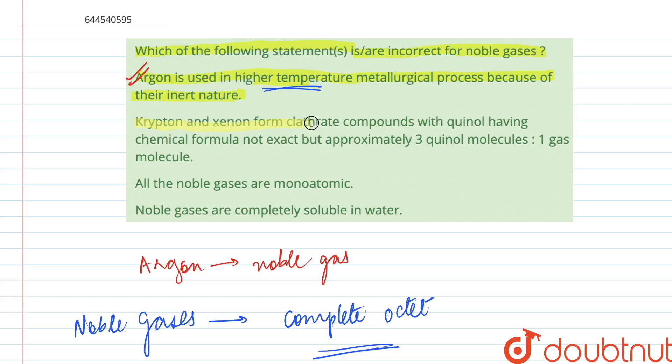Krypton and xenon form clathrate compounds with quinol having chemical formula not exact but approximately 3 quinol molecules to 1 gas molecule. This given statement is also correct since we know that xenon and krypton are used to form clathrate with quinol and the ratio is 3 to 1.